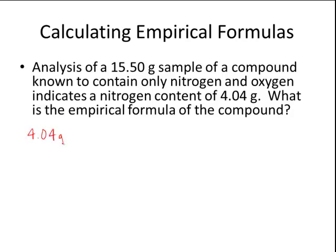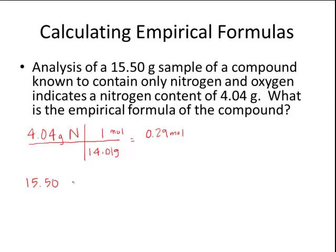Starting with 4.04 grams of nitrogen, we convert to moles by dividing by the molar mass of nitrogen, which is 14.01 grams per mole. Dividing gives us 0.29 moles. Since the compound only contains nitrogen and oxygen, we subtract the nitrogen mass from the total: 15.50 minus 4.04 grams gives us the mass of oxygen, which is 11.46 grams.